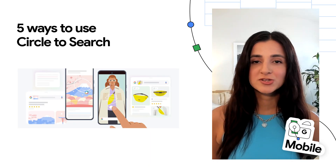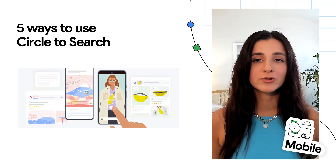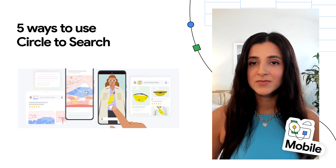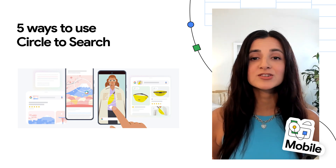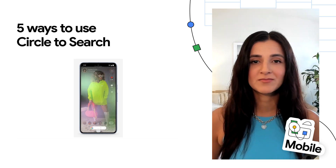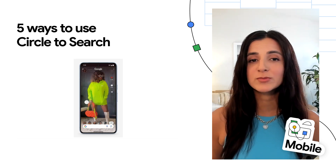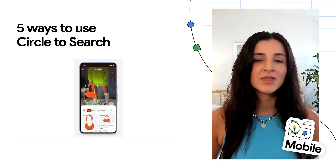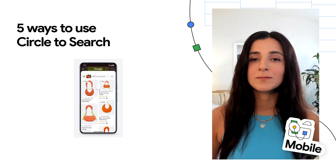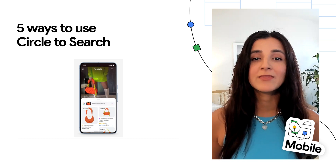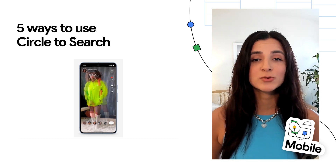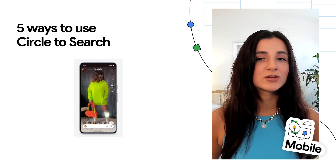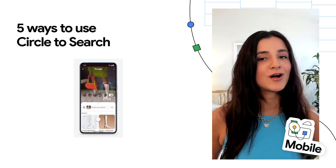Ever stumble on something interesting as you're browsing a website, scrolling through social media, or catching up on a group text? With Circle to Search, you can search anything with a simple gesture, like circling, highlighting, scribbling, or tapping, all without switching apps. Circle to Search is rolling out on Pixel 8, Pixel 8 Pro, and the new Samsung Galaxy S24 series. To learn more about ways you can use Circle to Search, check out the blog linked below.